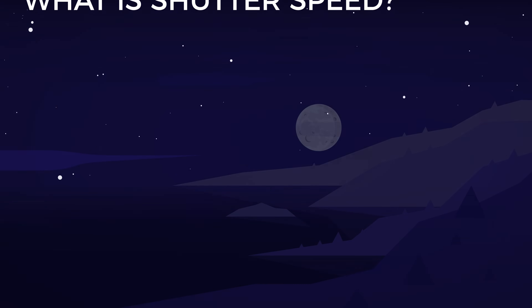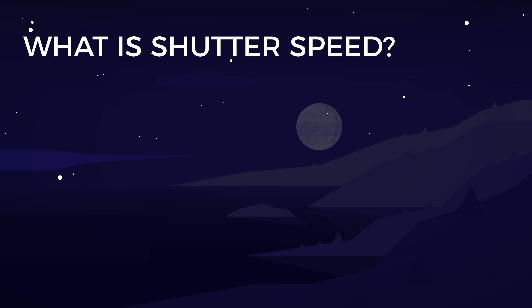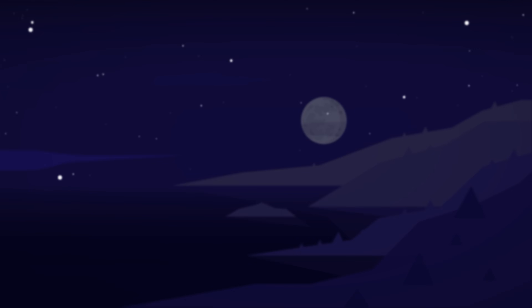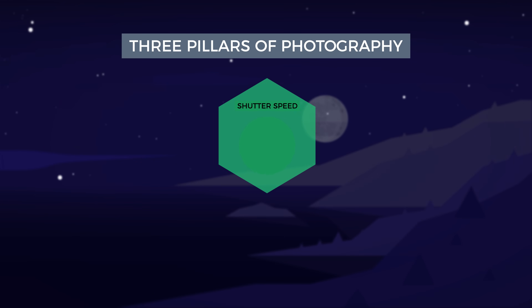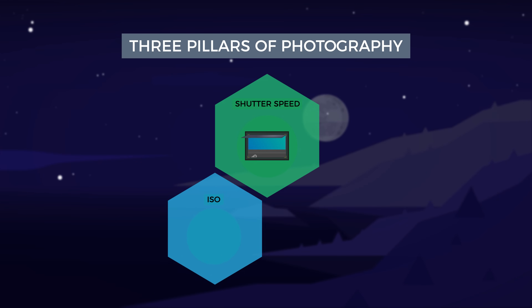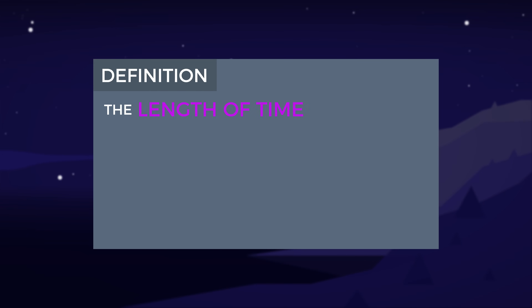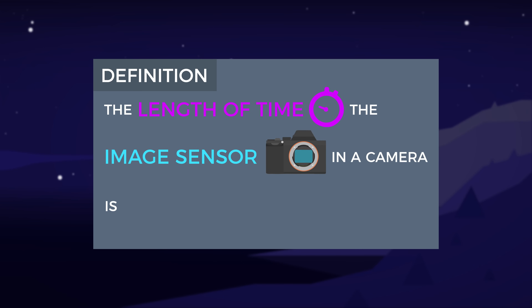What is shutter speed? While it may seem like the answer is obvious, there's more to shutter speed than meets the eye. Let's take a closer look. Shutter speed is one of the three pillars of photography, the other two being ISO and aperture. Also known as exposure time, shutter speed is defined as the length of time the image sensor in a camera is exposed to incoming light.